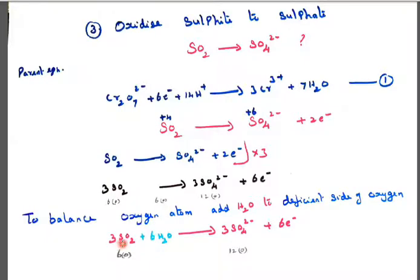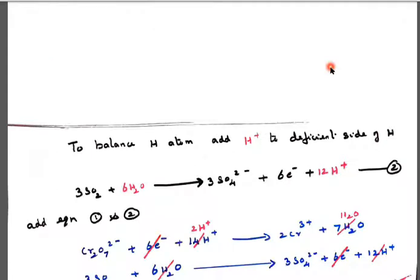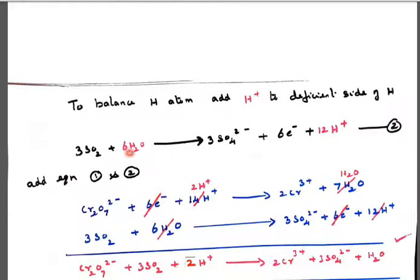After adding 6H₂O, we now have 12 oxygen on both sides — so oxygen is balanced. Now we have to balance hydrogen. 6 into 2 gives 12 hydrogen, so 12H⁺ should be added to the deficient side of hydrogen. So we add 12H⁺: 3SO₂ + 6H₂O → 3SO₄²⁻ + 6e⁻ + 12H⁺. Everything is balanced.